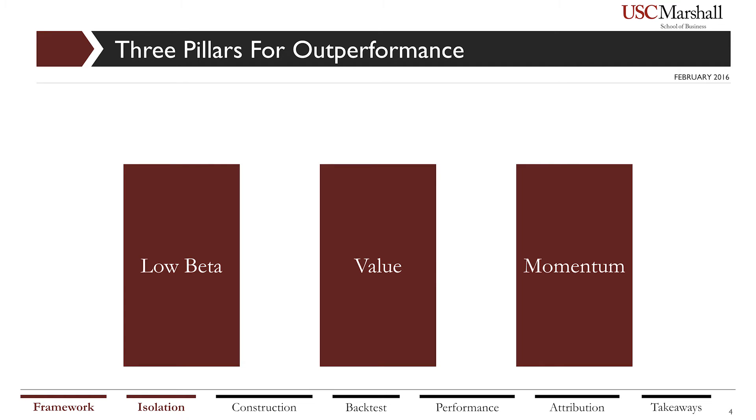Through our factor isolation research we determined our three robust factors to be low beta, value, and momentum. The low correlation among these three factors and their high positive expected returns implies that a simple combination of the three will generate even greater excess returns. I will now go in depth regarding the academic research behind our three factors — low beta, value, and momentum — and then show our methodology for forming the three-factor portfolio.